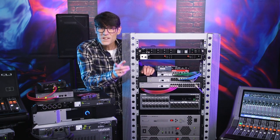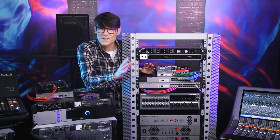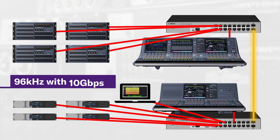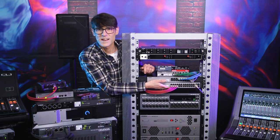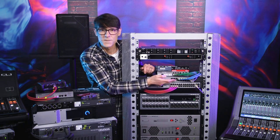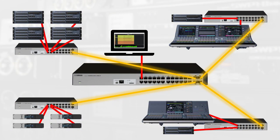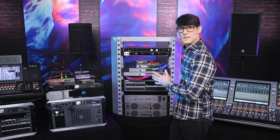When you wish to run your Dante system at 96kHz, you should consider using 10 gigabit connections between your switches to allow enough headroom in the network's bandwidth. The SWR2310-28GT, with its four 10-gig ports, is particularly suitable to use as the central hub of your Dante network.